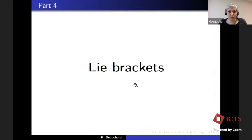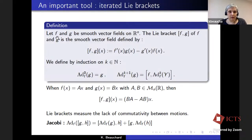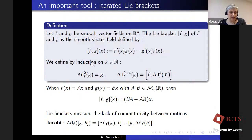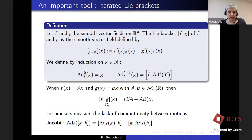We start with the definition of Lie brackets. If you have two vector fields F and G on R^n, you can define another vector field, the bracket of F and G, which is defined by F prime G minus G prime F. Then you can define by induction iterated Lie brackets of F and G. If F and G are linear vector fields associated with matrices A and B, then the Lie bracket of the vector fields F and G corresponds to the commutator of the matrices A and B.